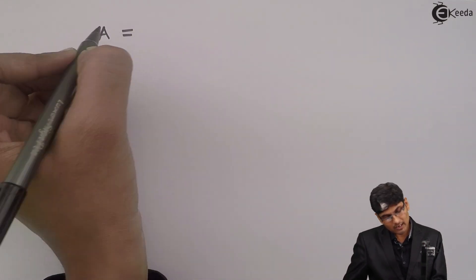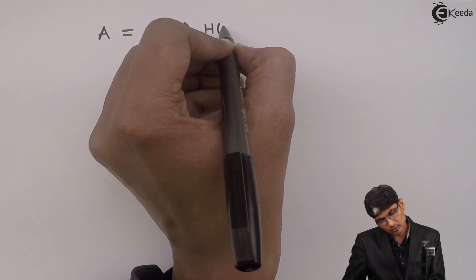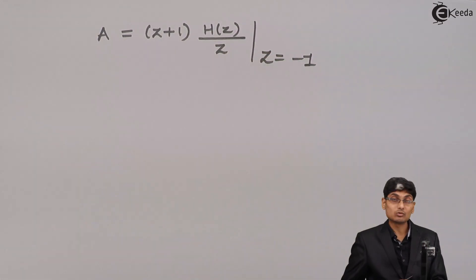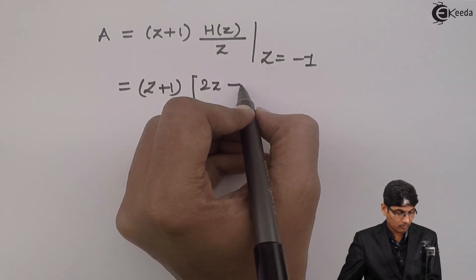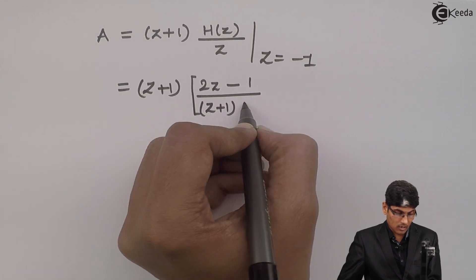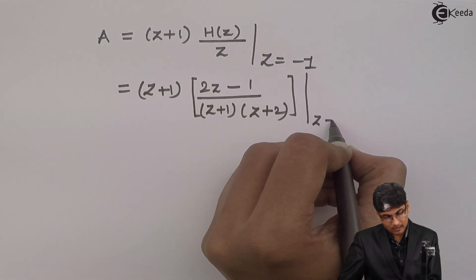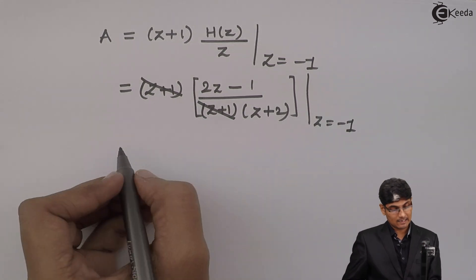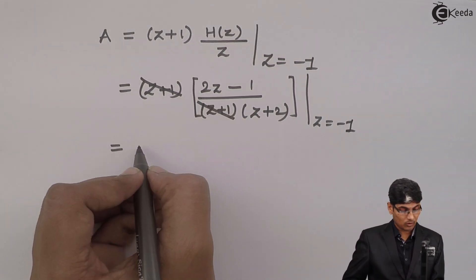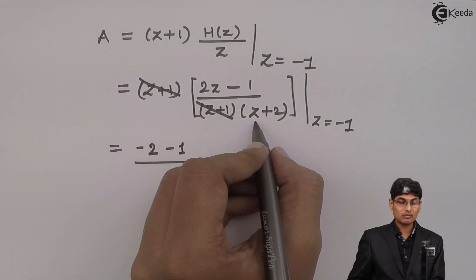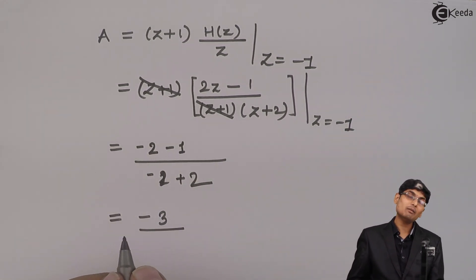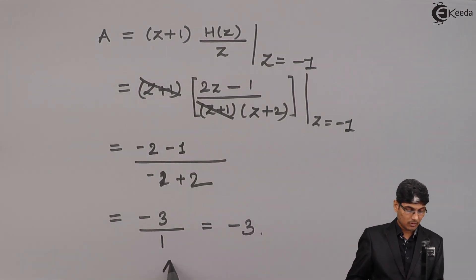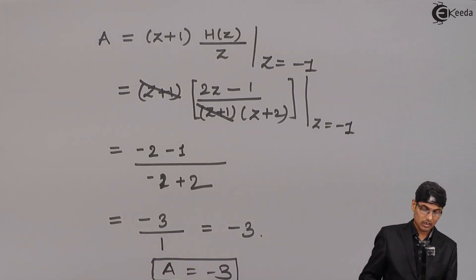To find constant A: A = (z + 1)·[H(z)/z] evaluated at z = -1. That gives (2(-1) - 1) / ((-1) + 2) = (-3) / (1) = -3. So A = -3.